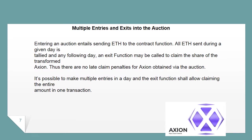Multiple entries and exits into the auction: Entering an auction entails sending ETH to the contract function. All ETH sent during a given day is tallied, and any following day an exit function may be called to claim the share of the transformed Axion. There are no late claim penalties for Axion obtained via the auction. It's possible to make multiple entries in a day, and the exit function shall allow claiming the entire amount in one transaction.